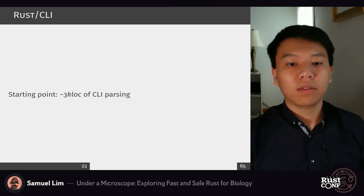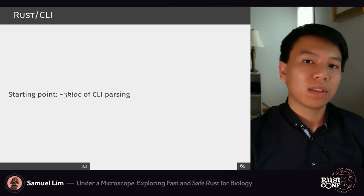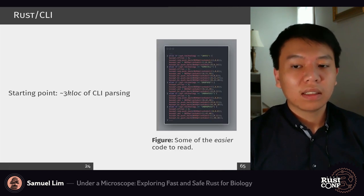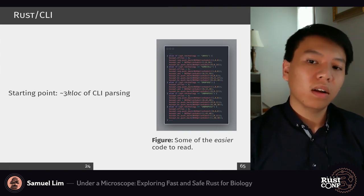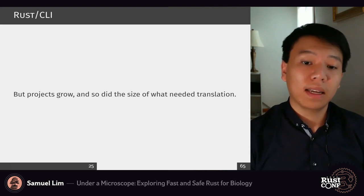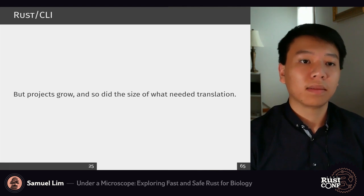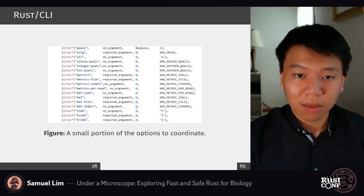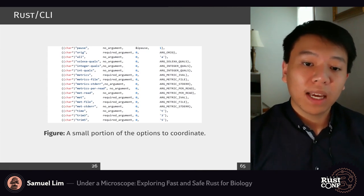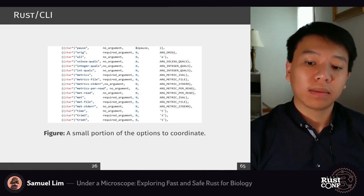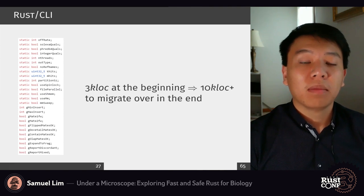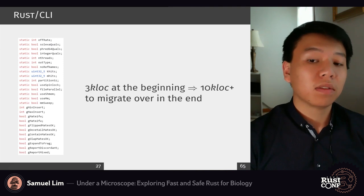Due to the fact that we had multiple tools to work with, the initial starting point of our translation was about 3,000 lines of logic, configuration, and command line parsing. Some of it was easier than other areas, and none of it was trivial to translate. Projects grow in size — what originally started as about 3,000 lines of CLI parsing with a few tools grew from 3 to 4 to 5 to 6 to 10 different tools, adding more arguments and configuration, ultimately becoming more than 10,000 lines of code to migrate, translate, and unify.